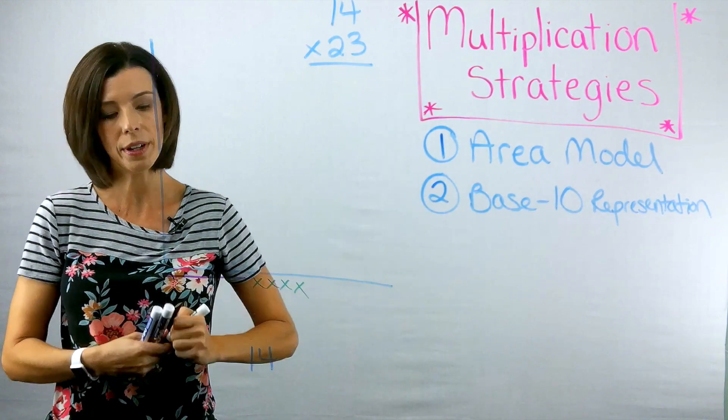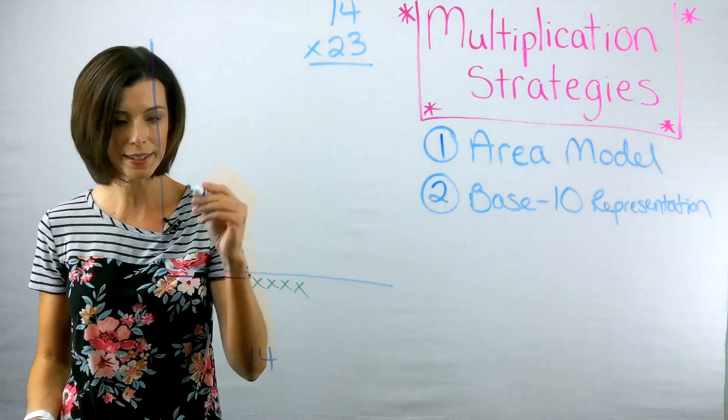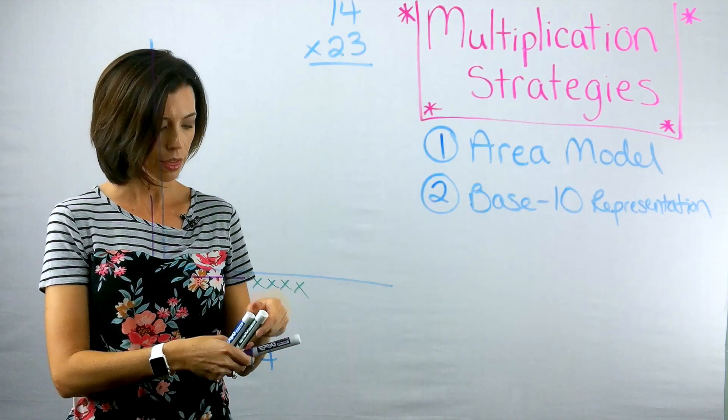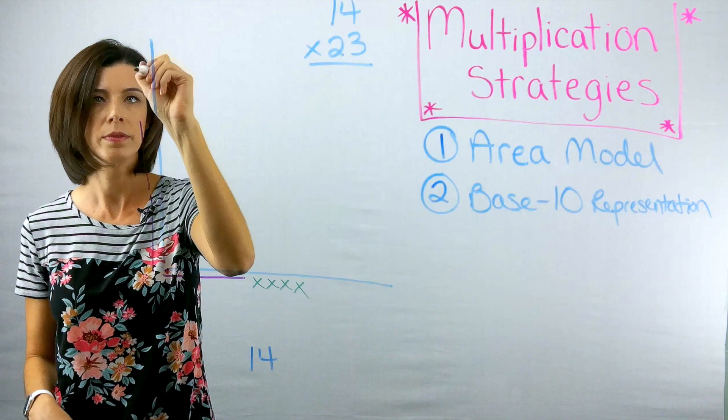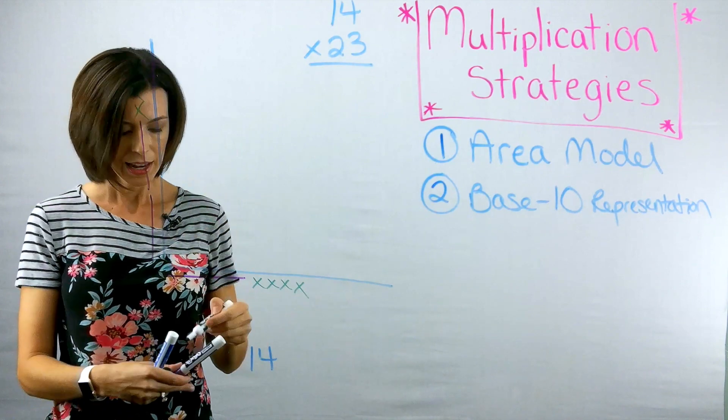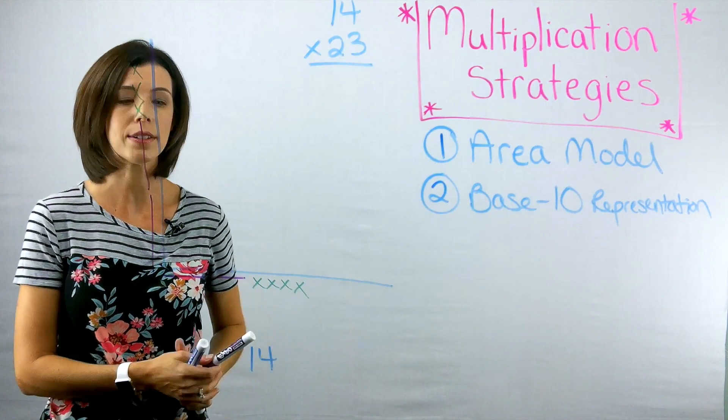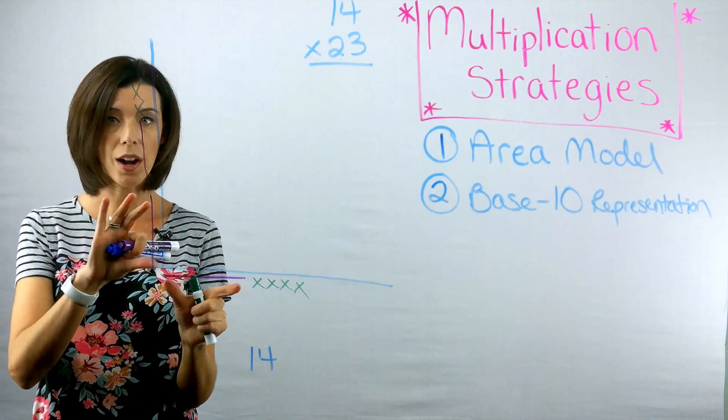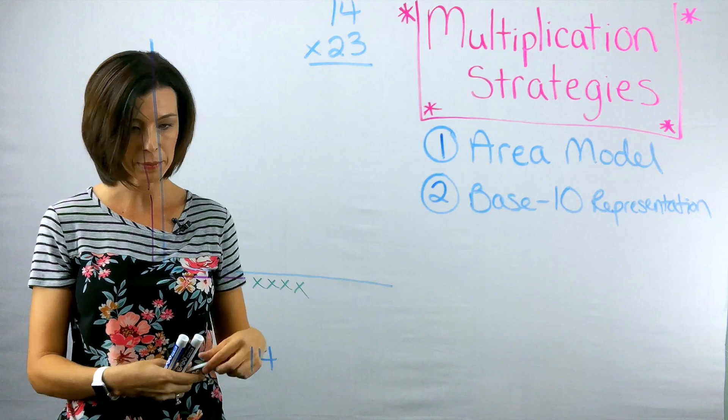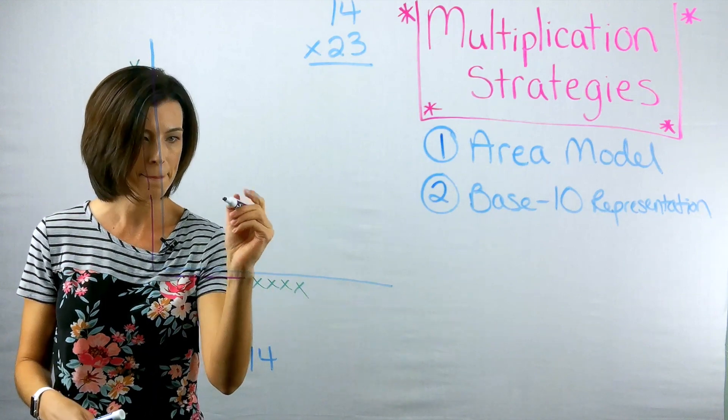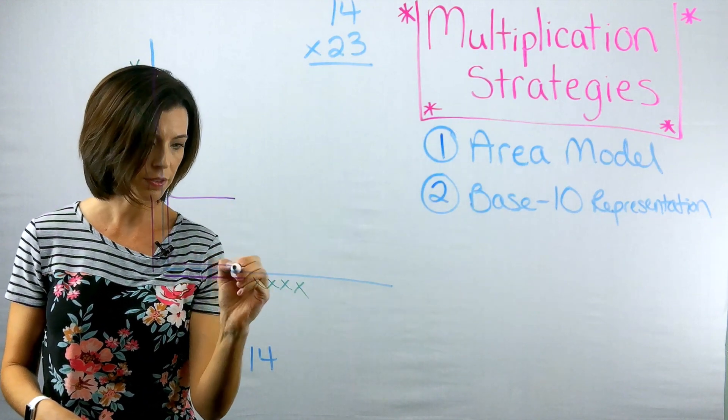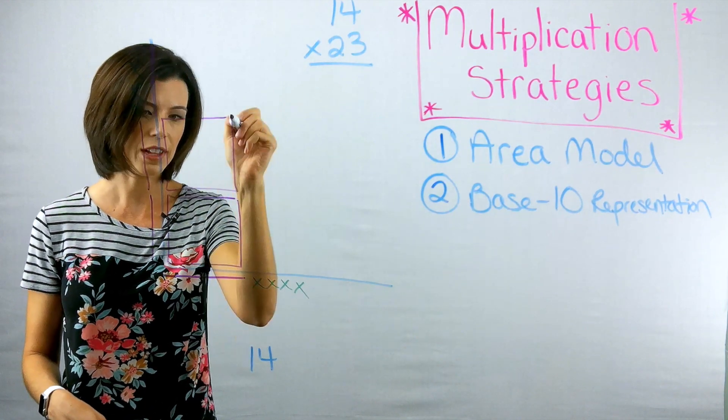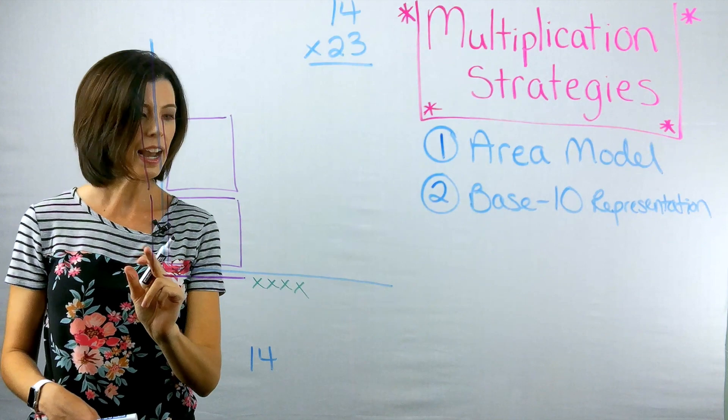So I know that I'm going to have one rod and four ones. And on this, I'm going to have two rods for 20. So one, two, and three ones. Now, if we had base 10 blocks, we would be filling these in. So you can see that the rod would be a flat. So I'm going to go ahead and draw that. Here's a rod times another rod. That would be another flat.